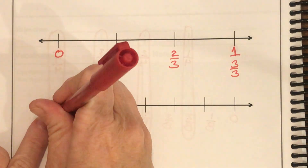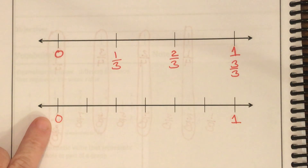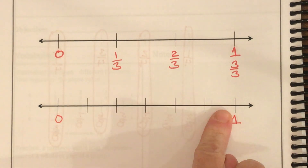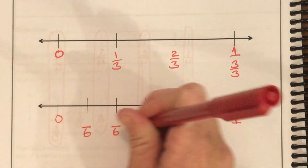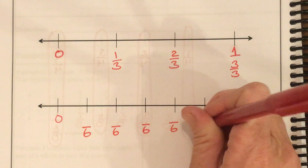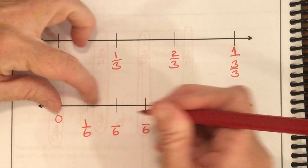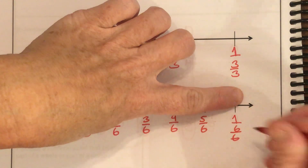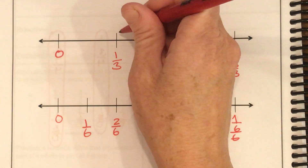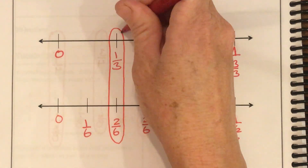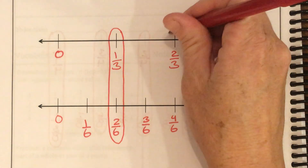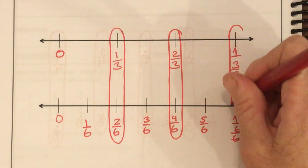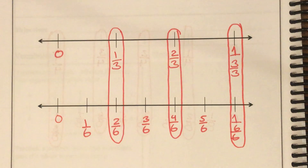Now let's look at this number line. I put zero and one, then count how many parts: one, two, three, four, five, six parts. That tells me my denominator is going to be a six. My numerators go one-sixth, two-sixths, three-sixths, four-sixths, five-sixths, and six-sixths. So what's equivalent? One-third is equivalent to two-sixths. Two-thirds is equivalent to four-sixths. And three-thirds is equivalent to six-sixths — they're all exactly the same amount.